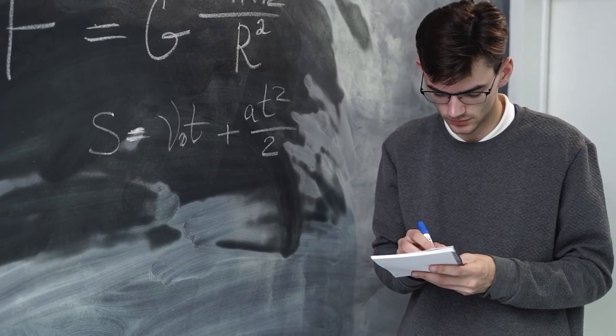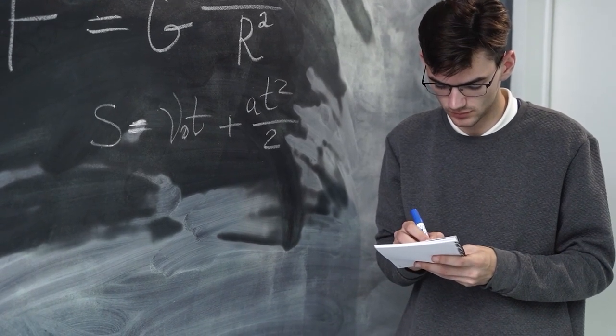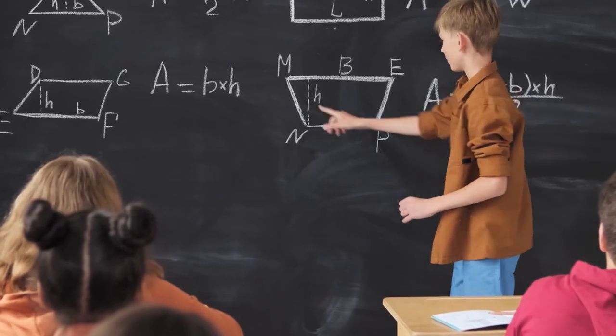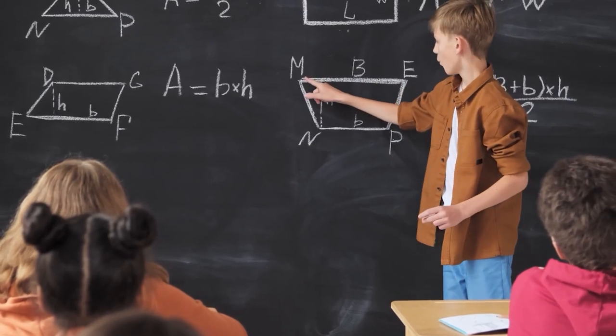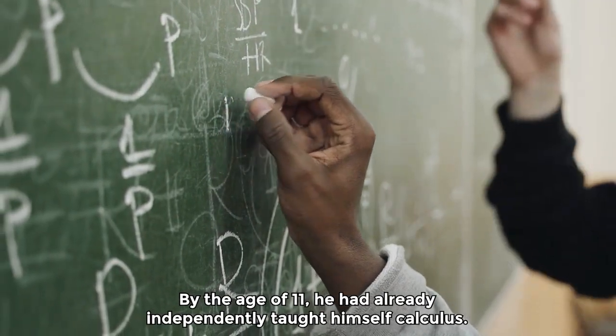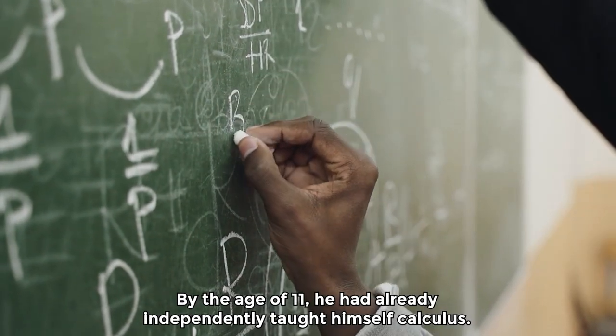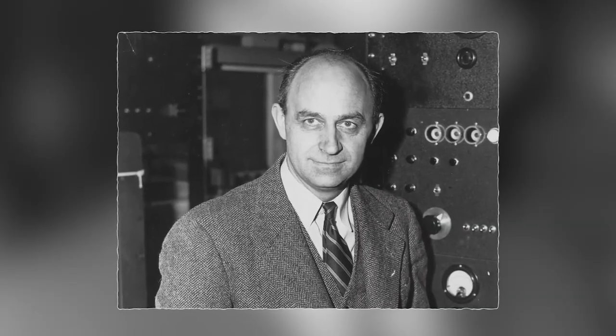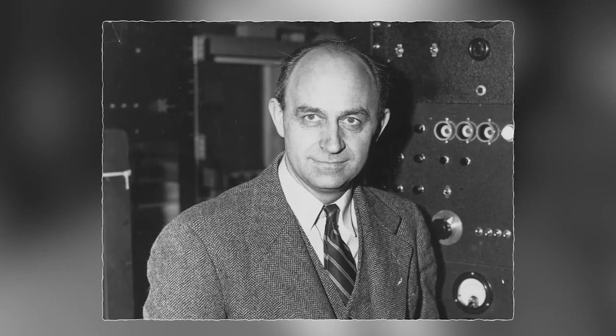From an early age, Fermi showed a remarkable aptitude for mathematics and physics. He attended local schools and displayed an exceptional talent for mathematics. By the age of 11, he had already independently taught himself calculus. His parents recognized his extraordinary abilities and supported his education.